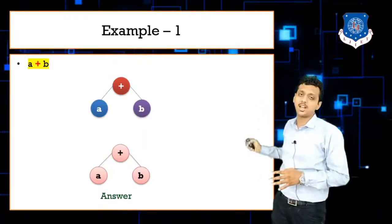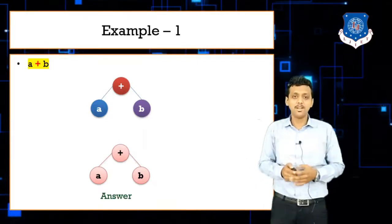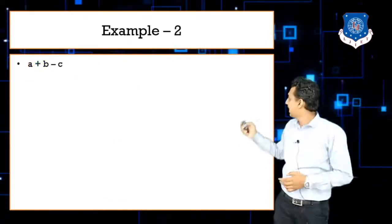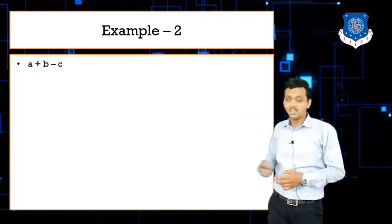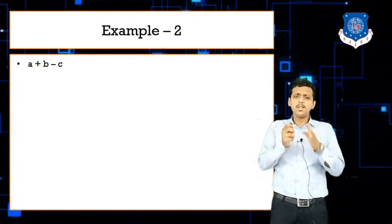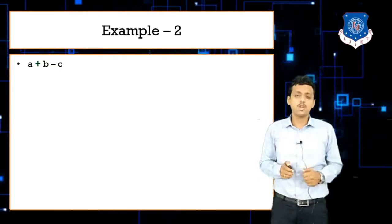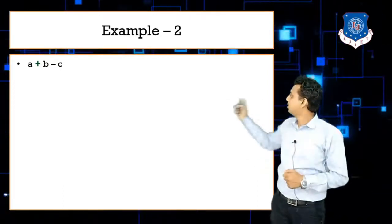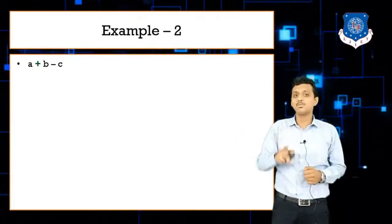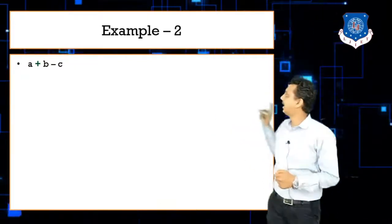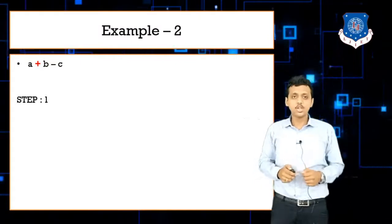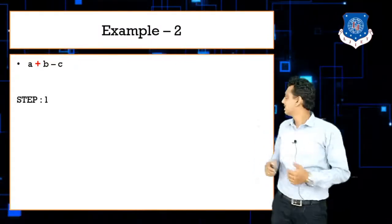The resulting tree has plus as the root node, a on the left, and b on the right. Now let's take example two: a + b - c. Since plus and minus have the same precedence, we go from left to right, so we solve plus first.